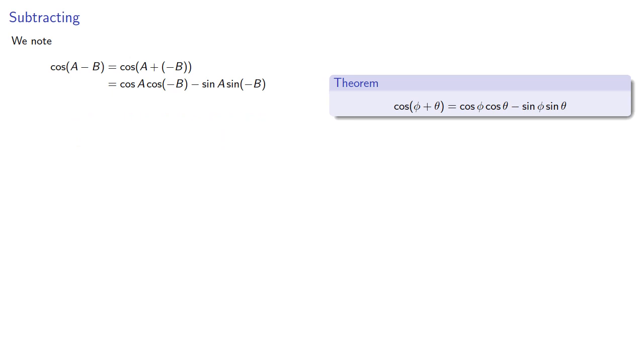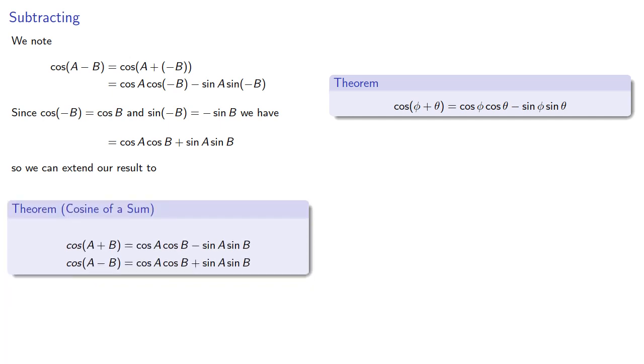Since cosine of negative B is cosine of B, and sine of negative B is negative sine of B, we can simplify. So we can extend our result to include the cosine of a difference.